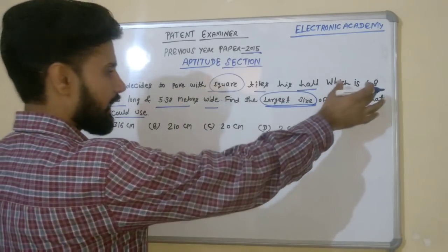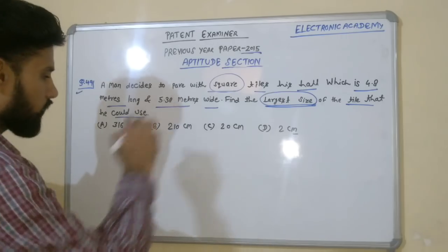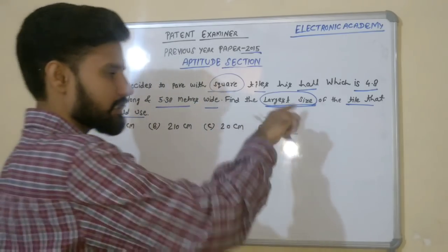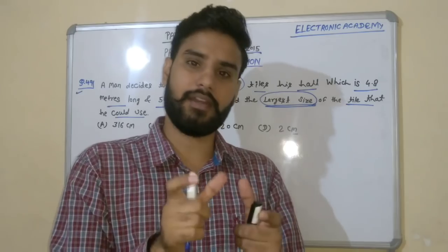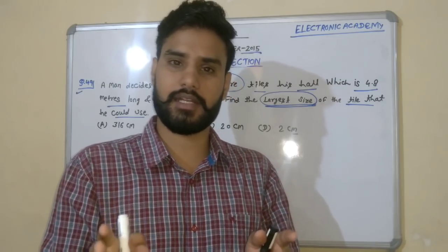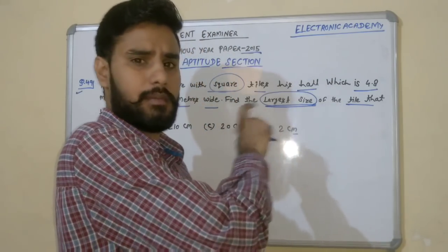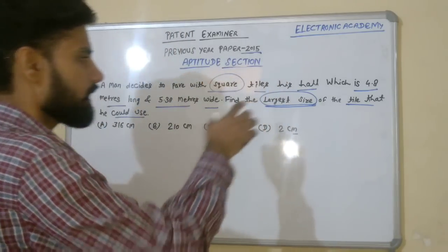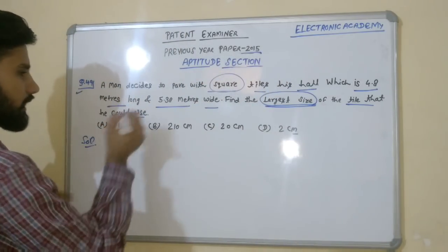So let's take the length and width. We are talking about 4.8 and 5.38. When we are talking about the largest size, we are talking about the common factor — the maximum largest common factor. That's why this question is from HCF-LCM.